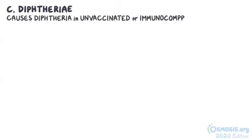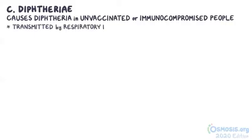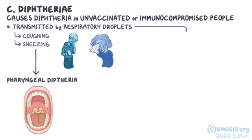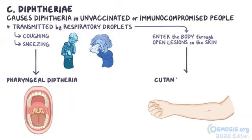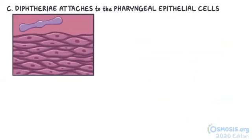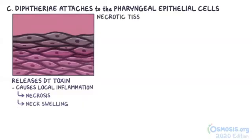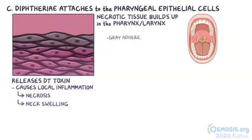C. diphtheriae mainly causes diphtheria in unvaccinated or immunocompromised people. The bacteria can be transmitted from one person to another mainly by respiratory droplets following coughing or sneezing, in which case it causes pharyngeal diphtheria, but they can also enter the body through open lesions on the skin, causing cutaneous diphtheria. Following inhalation of infected respiratory droplets, C. diphtheriae attaches to the pharyngeal epithelial cells, where it releases DT toxin. This causes local inflammation that leads to necrosis of pharyngeal tissue and neck swelling. The necrotic tissue builds up over the pharynx and larynx, forming a gray adherent leathery membrane, commonly referred to as a pseudomembrane.